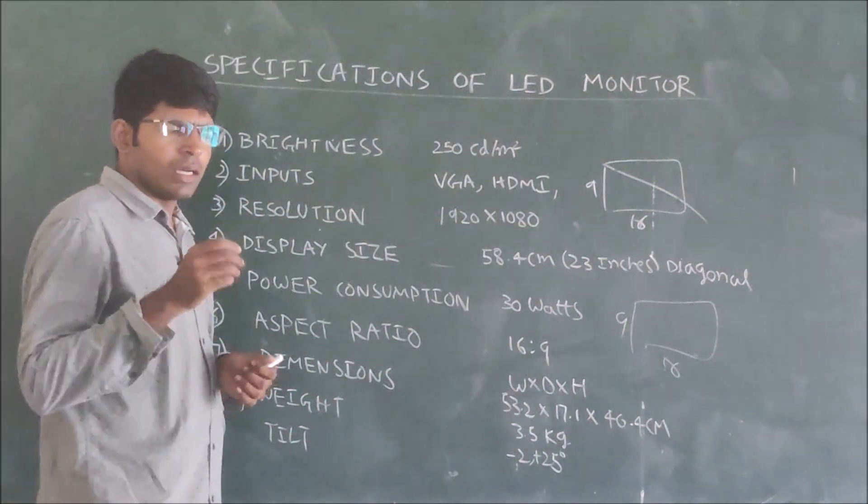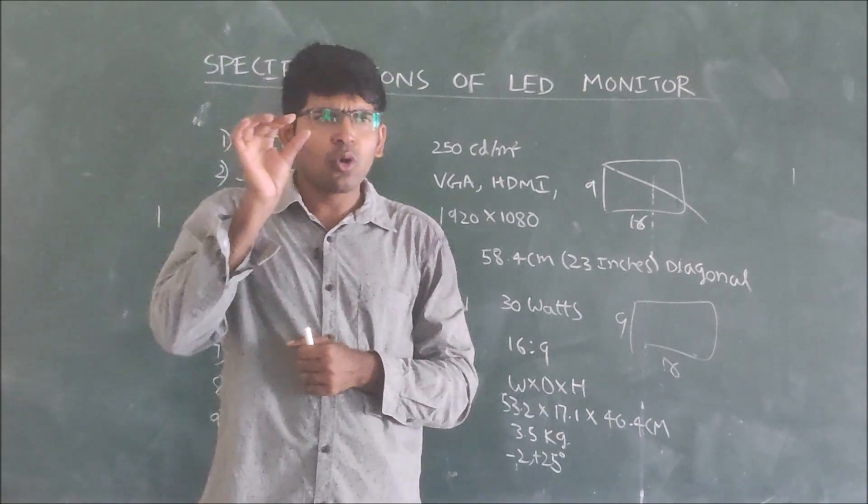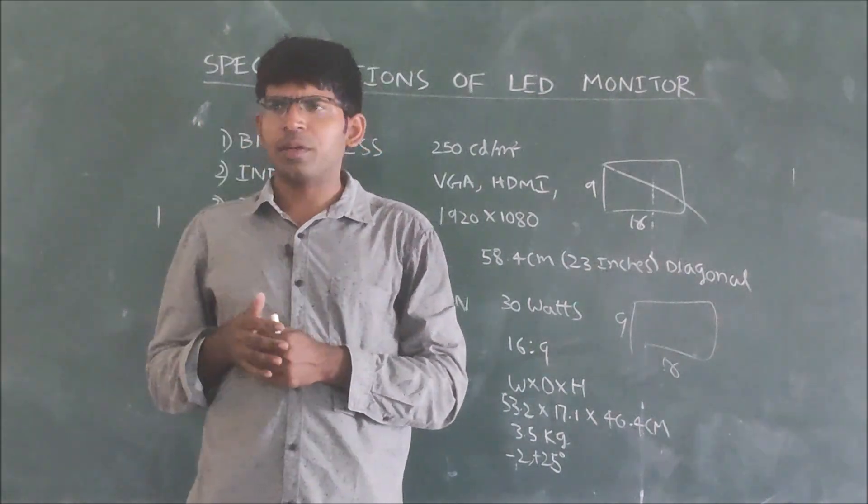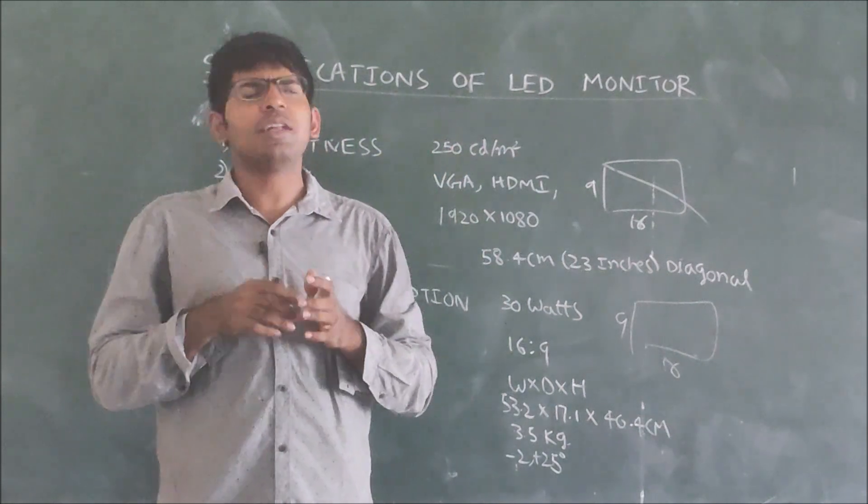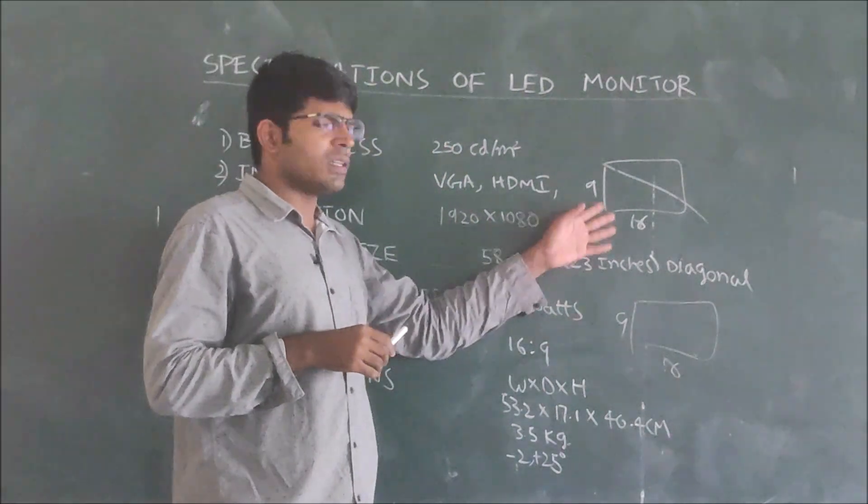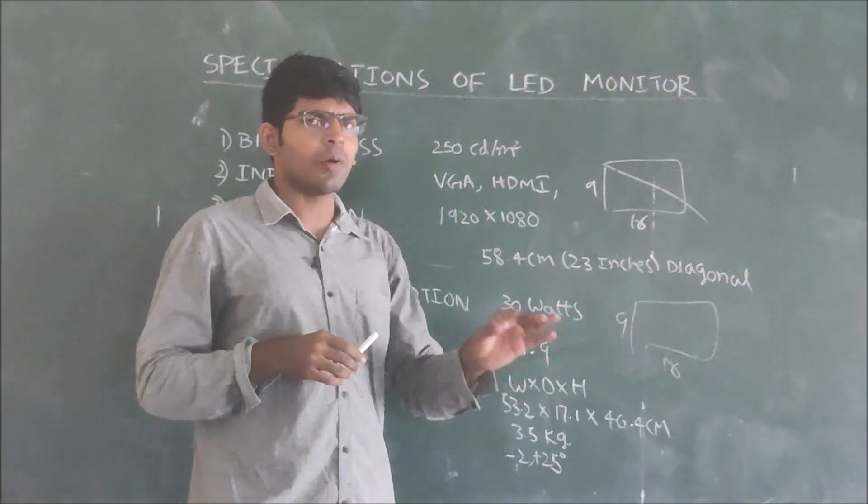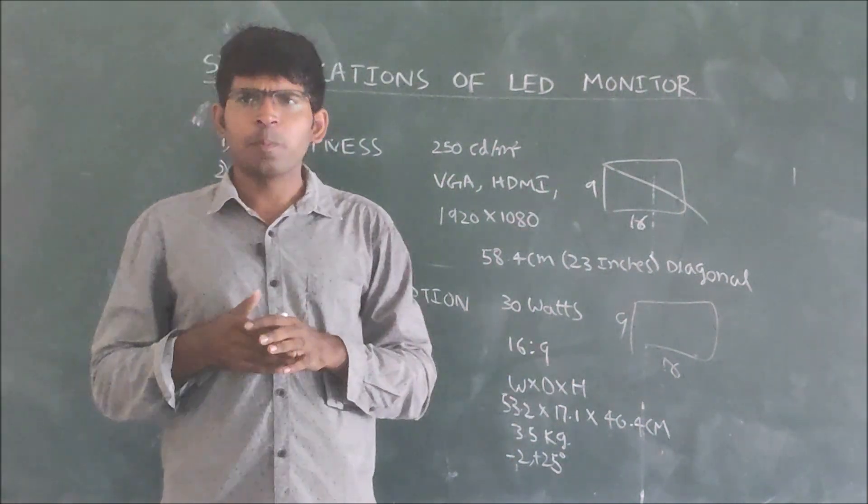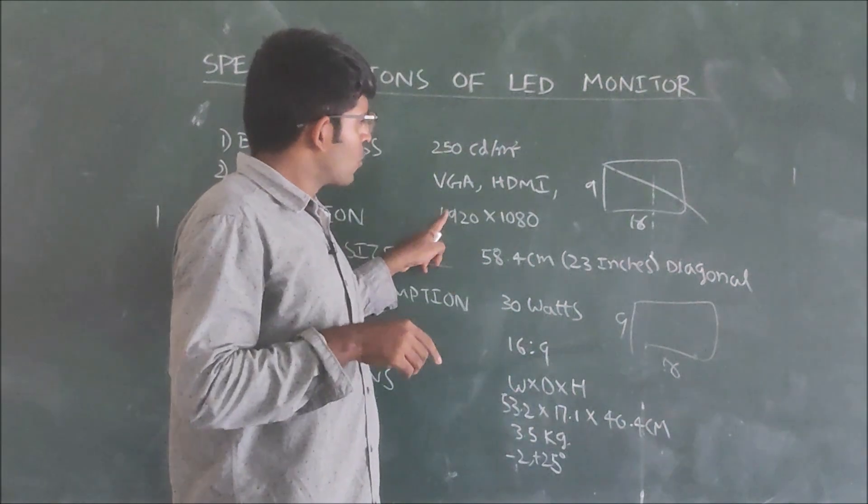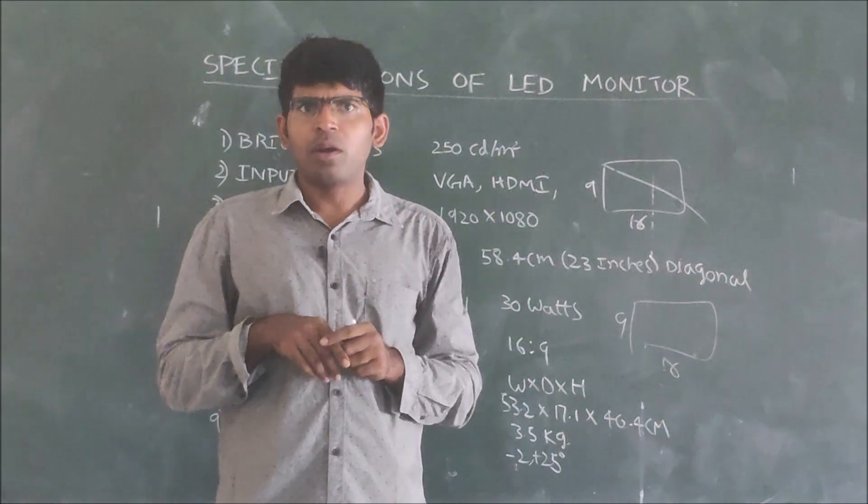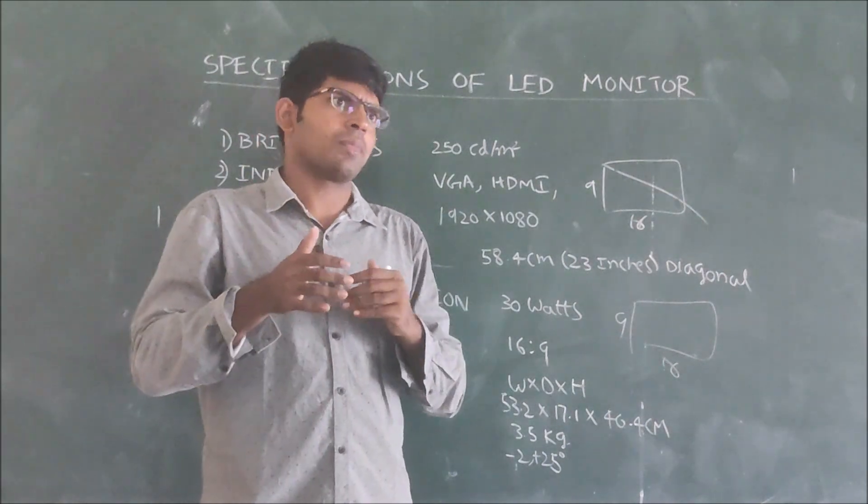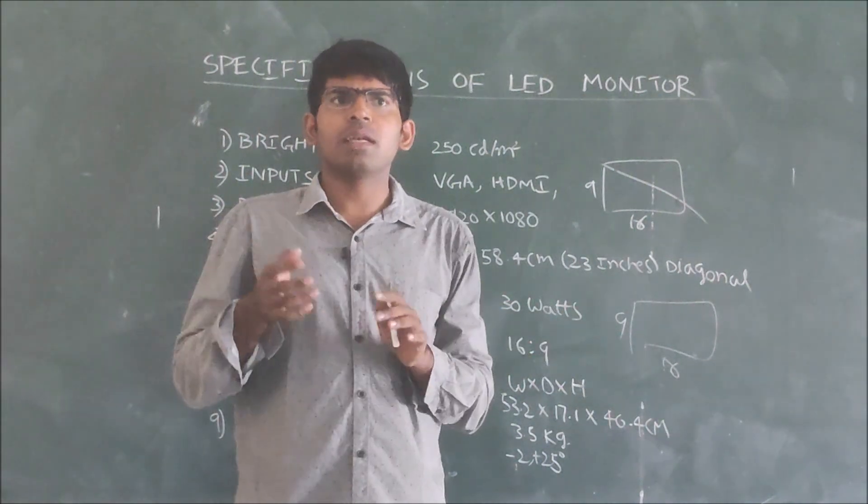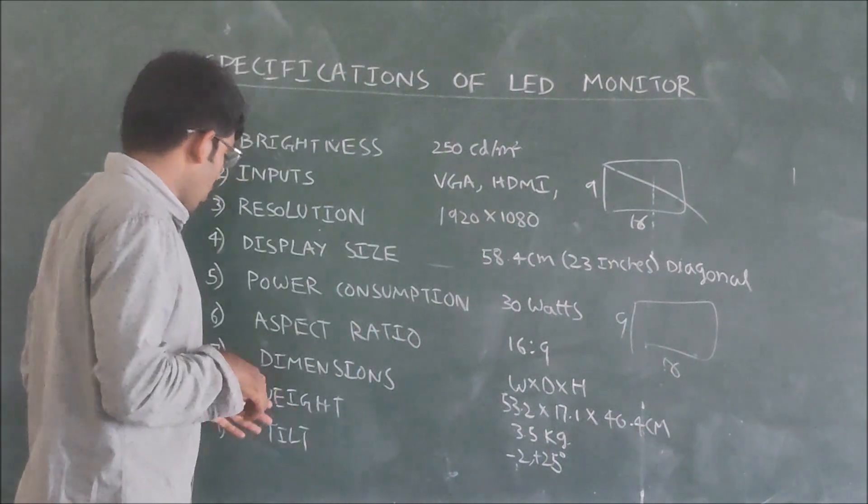And the next one is weight. We always require low weight LED monitor. We don't want a very huge weighted LED monitor. Normally 23 inches LED monitor will have 3.5 kg weight. In olden days, for this much 23 inches monitor, it might be more than 10 kg also at that time.